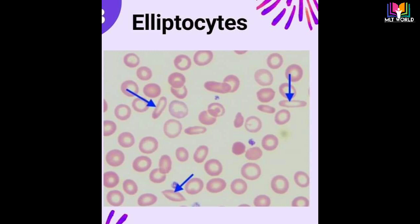First, we will start with elliptocytes. As the arrow is indicating, those RBCs are elliptocytes. Elliptocytosis is a hereditary disorder of red blood cells, and in this condition RBCs assume an elliptical shape rather than the typical round shape. Hereditary elliptocytosis is a congenital red blood cell membrane disorder that can cause mild hemolytic anemia. Symptoms generally include variable degree of anemia, jaundice, and splenomegaly.